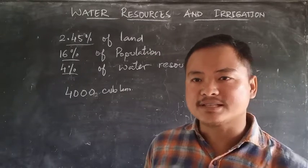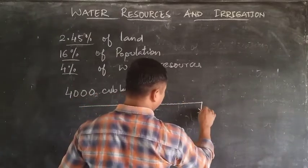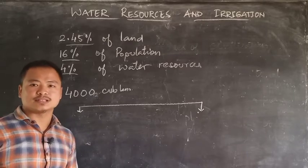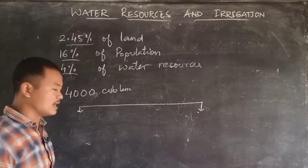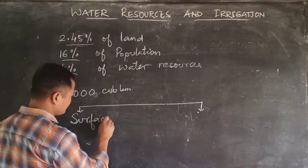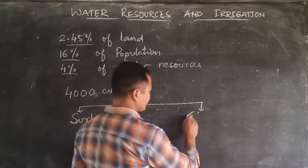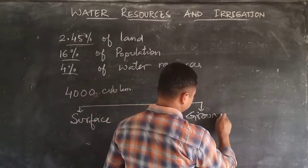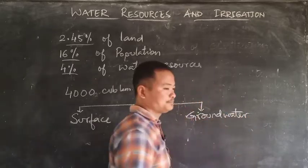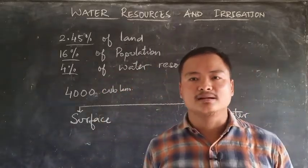If we see the resources of water in India, apart from precipitation, the most important water resources that can be utilized are surface water as a form of fresh water, and then we have groundwater — surface water and groundwater.